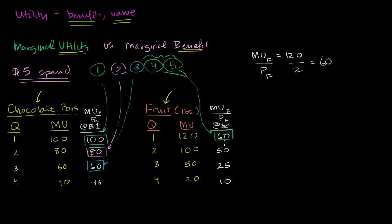What was useful about this is that it allowed us — without thinking about money, just by saying how much we like these things irrespective of their actual price — to then think rationally, given a certain price, about how we would actually spend our money. In this case, when chocolate bars are $1 and fruit is $2 per pound, we decided to buy three chocolate bars and only one pound of fruit.